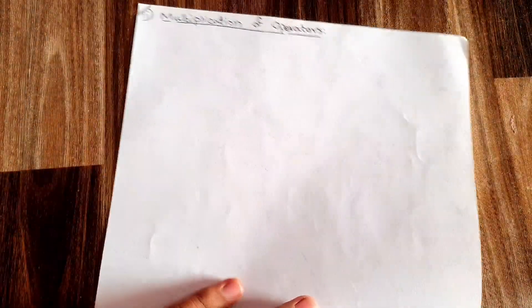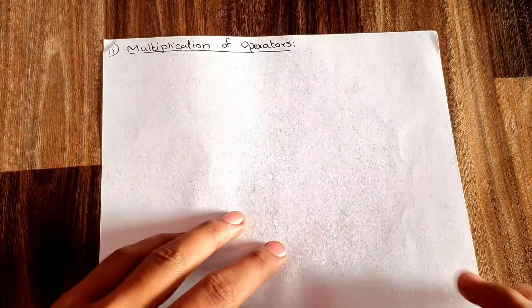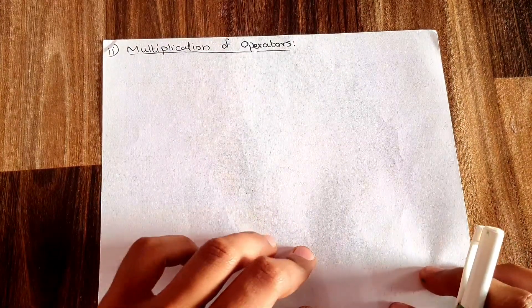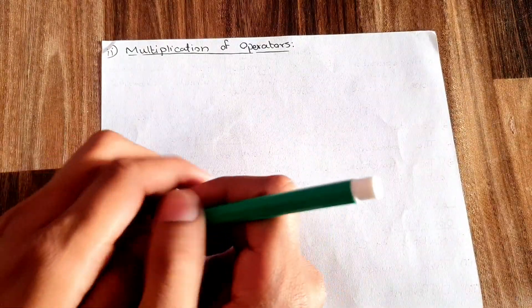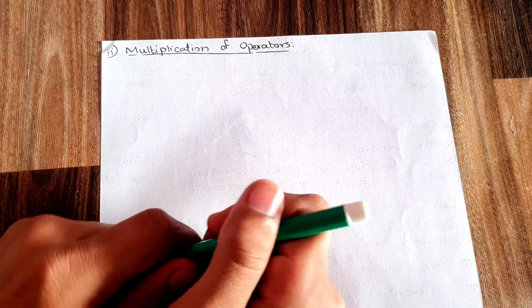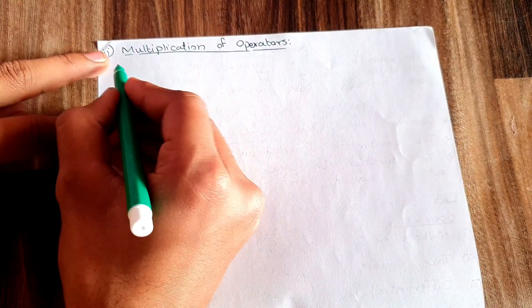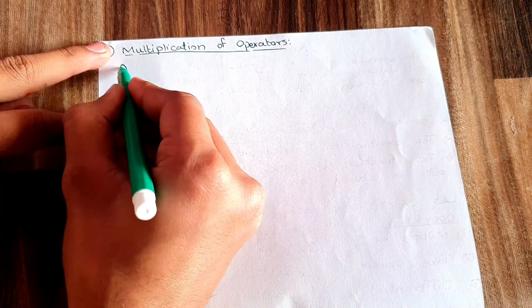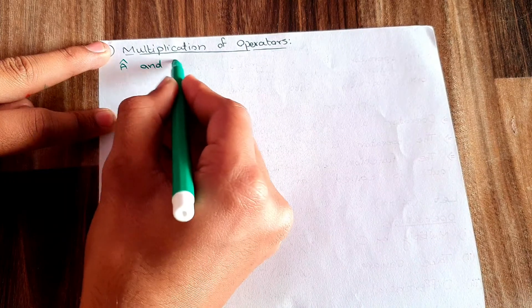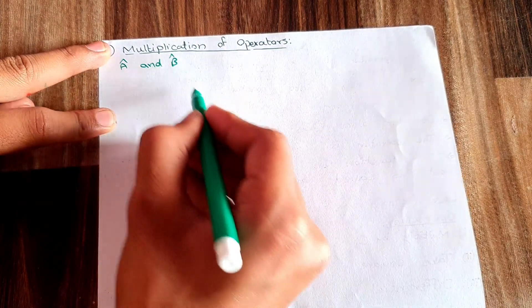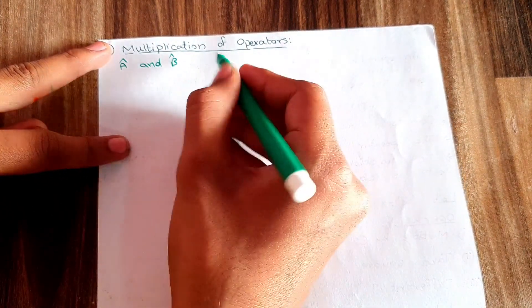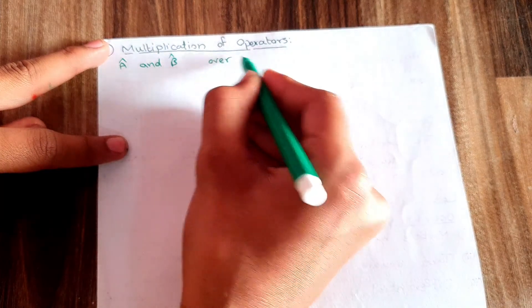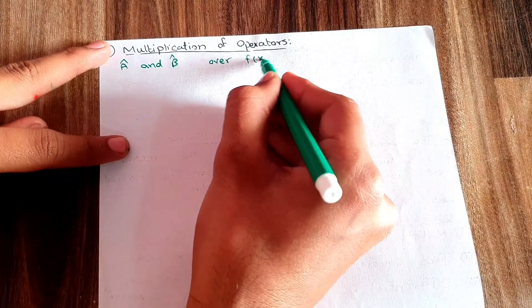The next thing we are going to study is the multiplication of operators. Taking the same operators A and B and the same function f(x) — if operators A and B are both being applied over a function f(x), how would I do that?